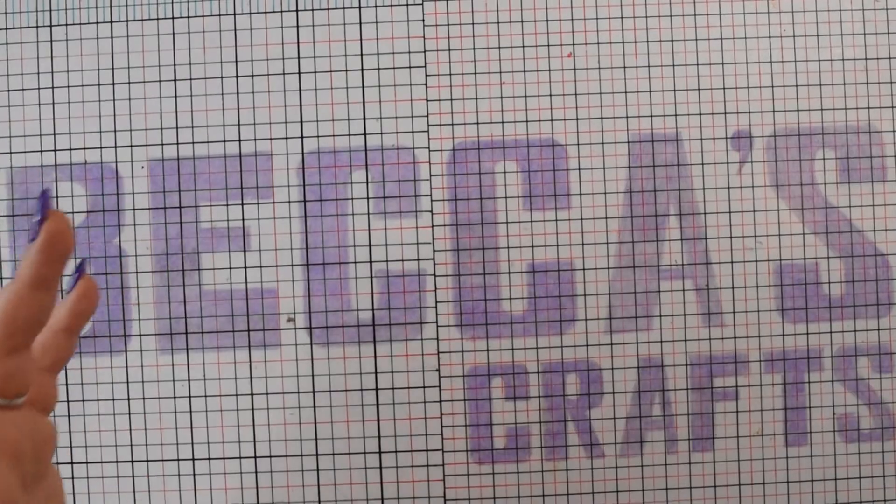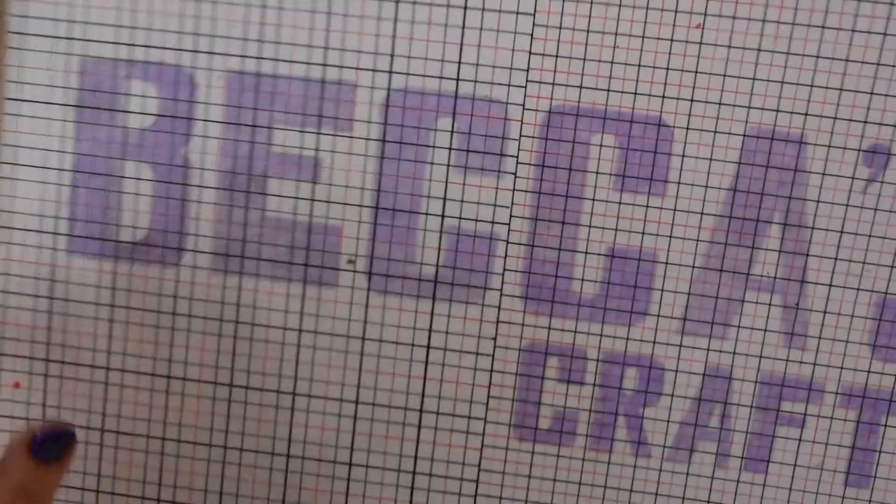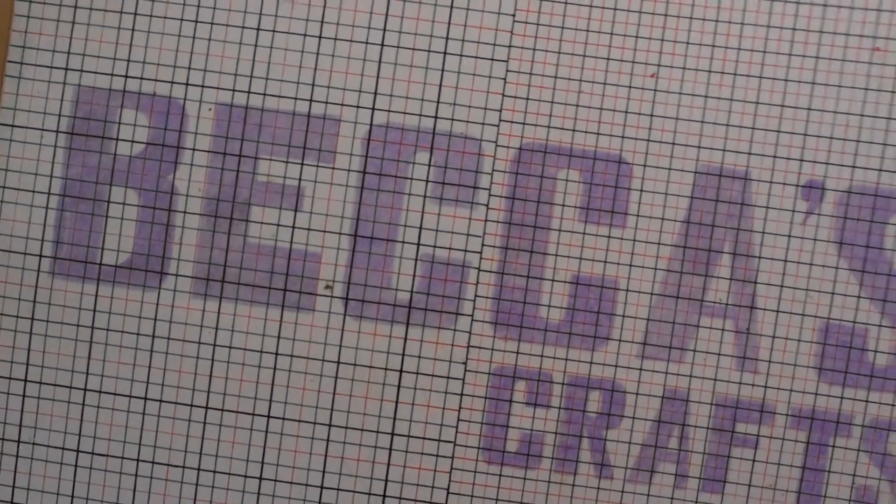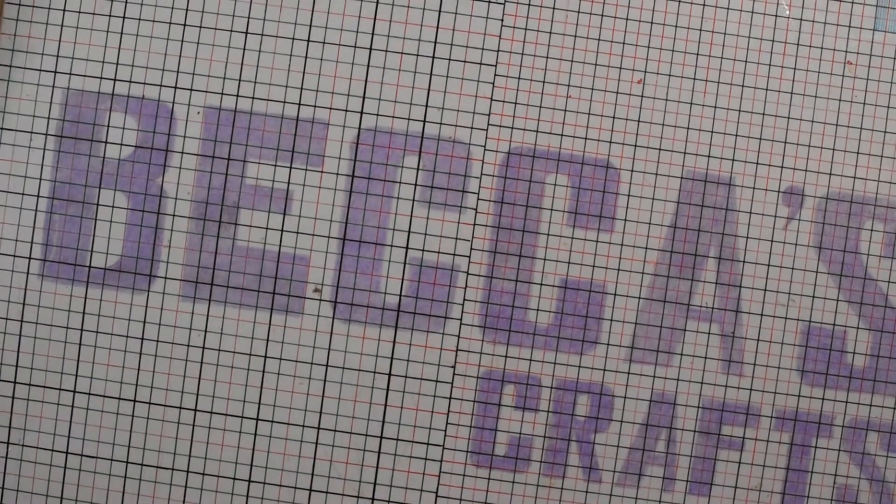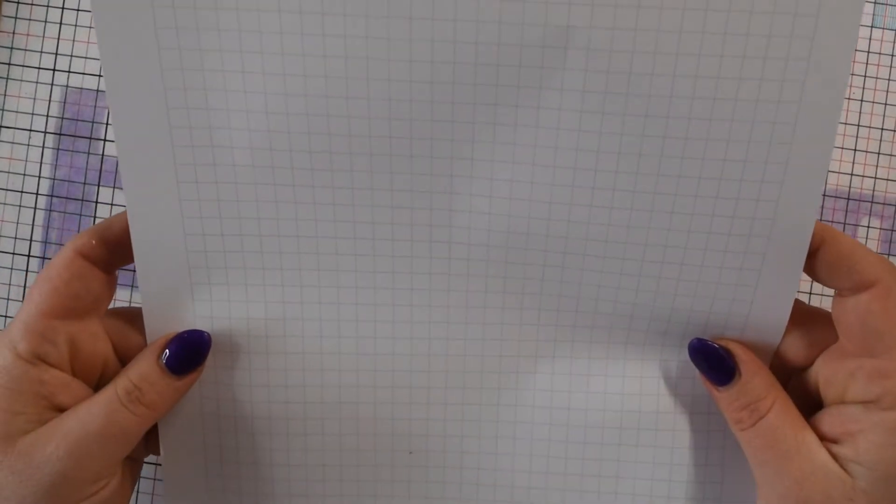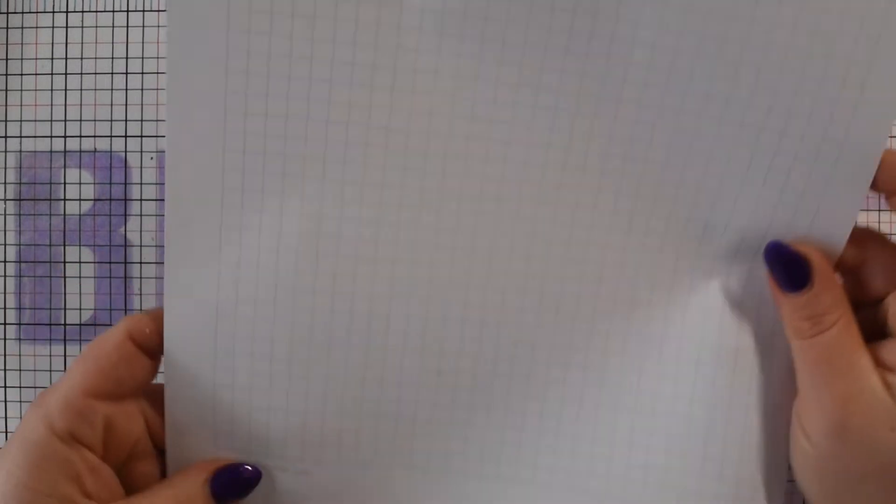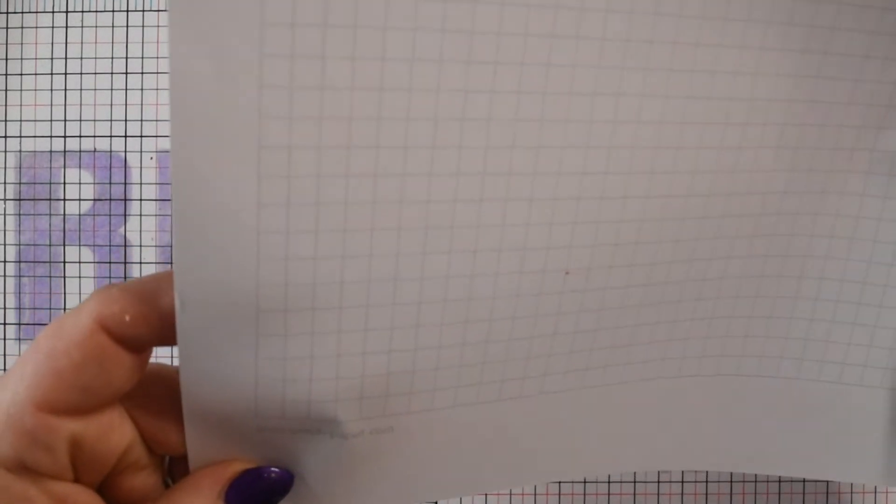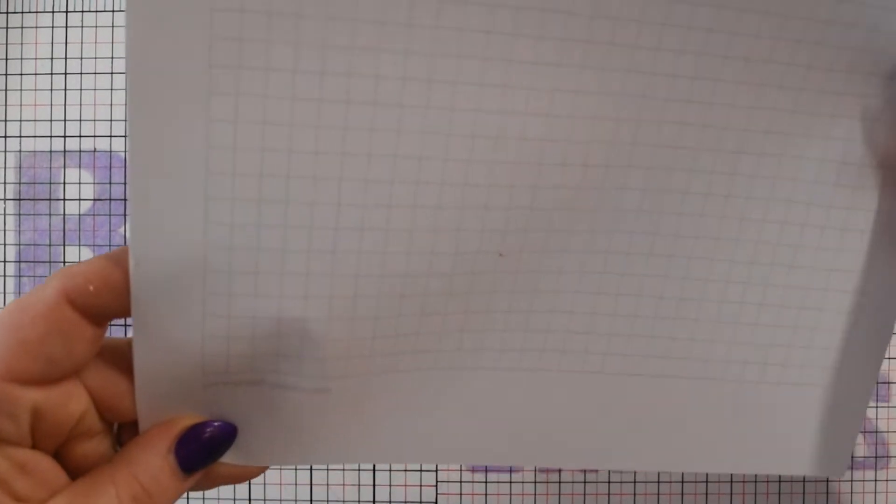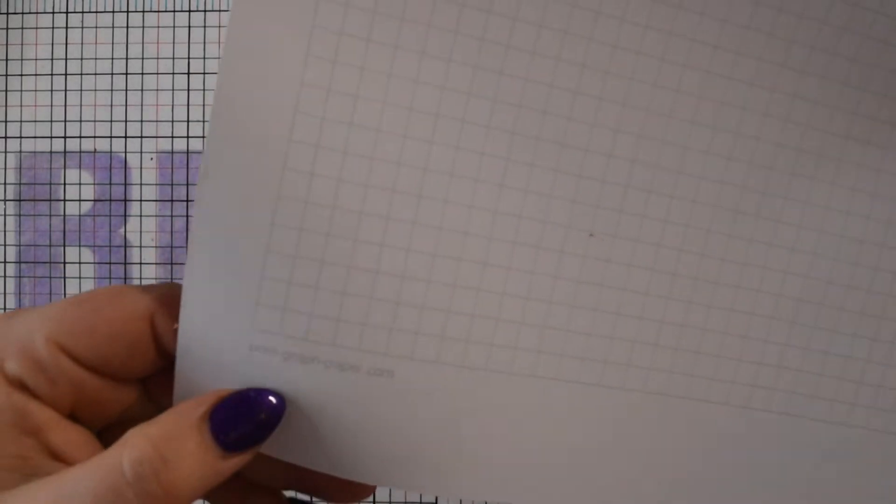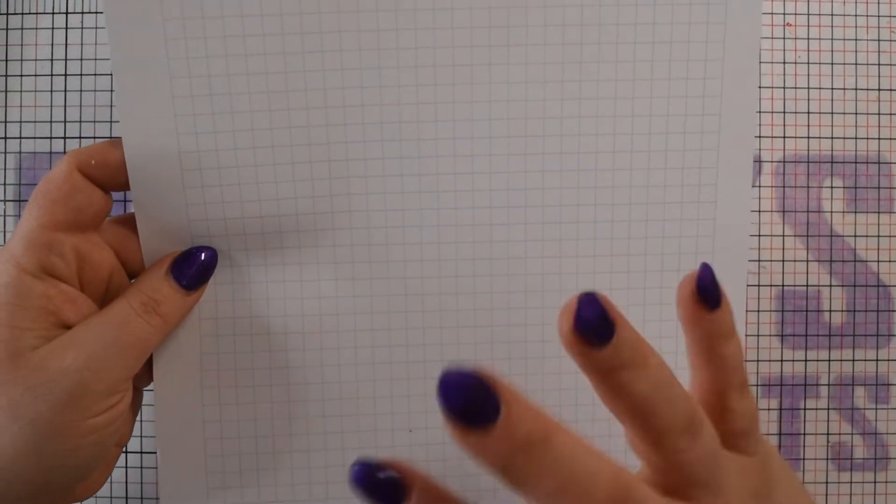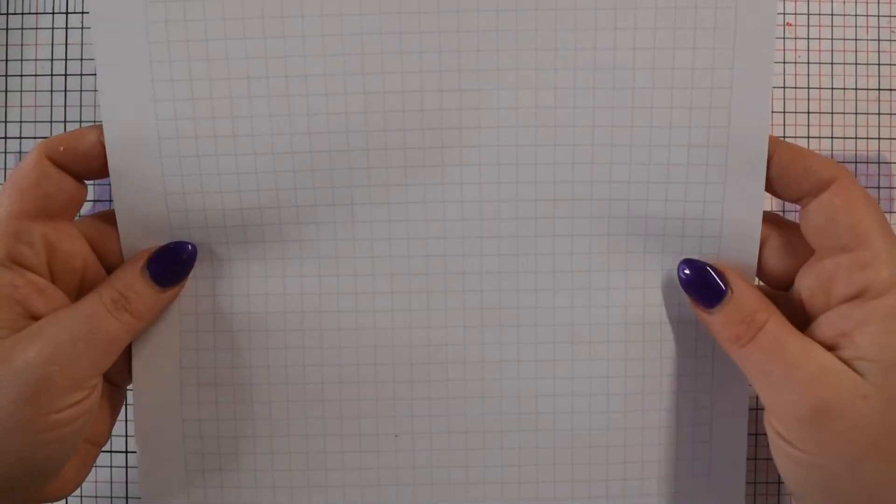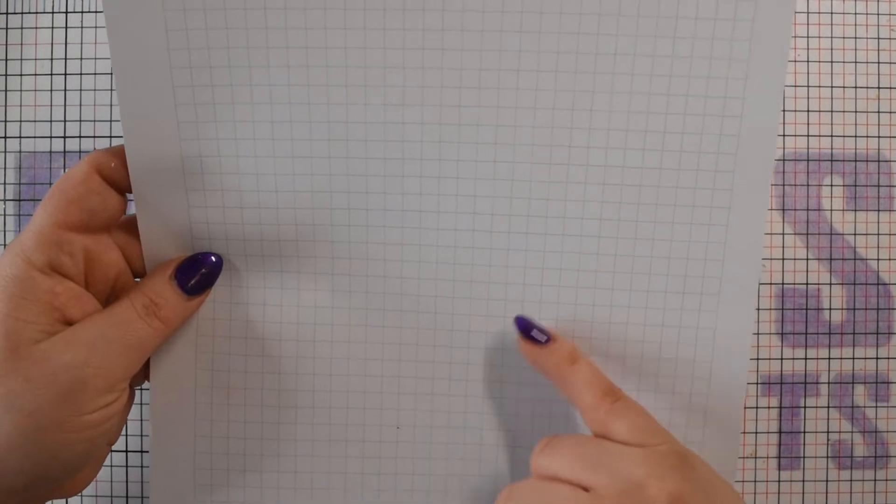A cheating way that I've found is by printing off some free graph paper that you can download off the internet. This one is printgraphpaper.com. I'll either put the link in the video or in the description box. It's got all different graph papers.